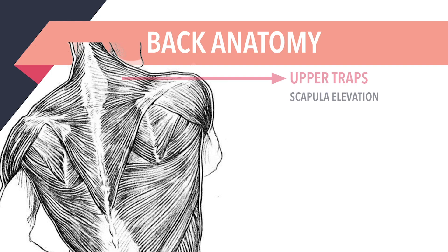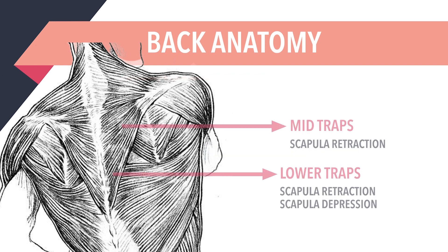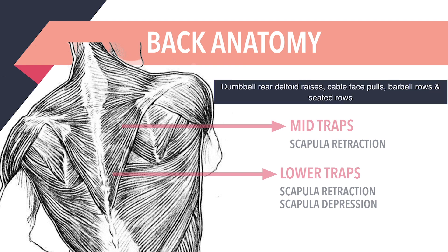Since the upper traps are mainly involved in scapular elevation — the lifting up of the shoulder blade — they are best targeted by exercises such as shrugs, deadlifts, and power cleans. On the other hand, since the mid and lower traps are mainly involved with scapular retraction and depression, they are best targeted by exercises involving rowing or bringing the shoulder blades back towards each other, such as dumbbell rear deltoid raises, cable face pulls, barbell rows, and seated rows.